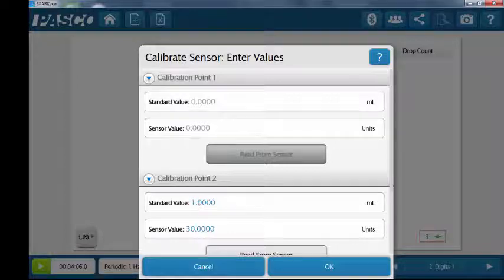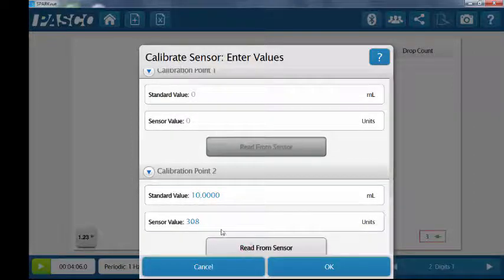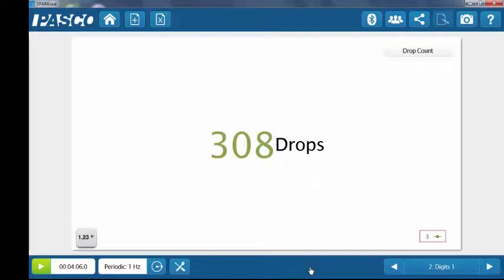And in calibration point 2, enter the volume collected in the graduated cylinder, which here was 10.00 milliliters. And then click read from sensor. The drop count should be automatically entered into the sensor value box. Click OK, and the calibration is complete.